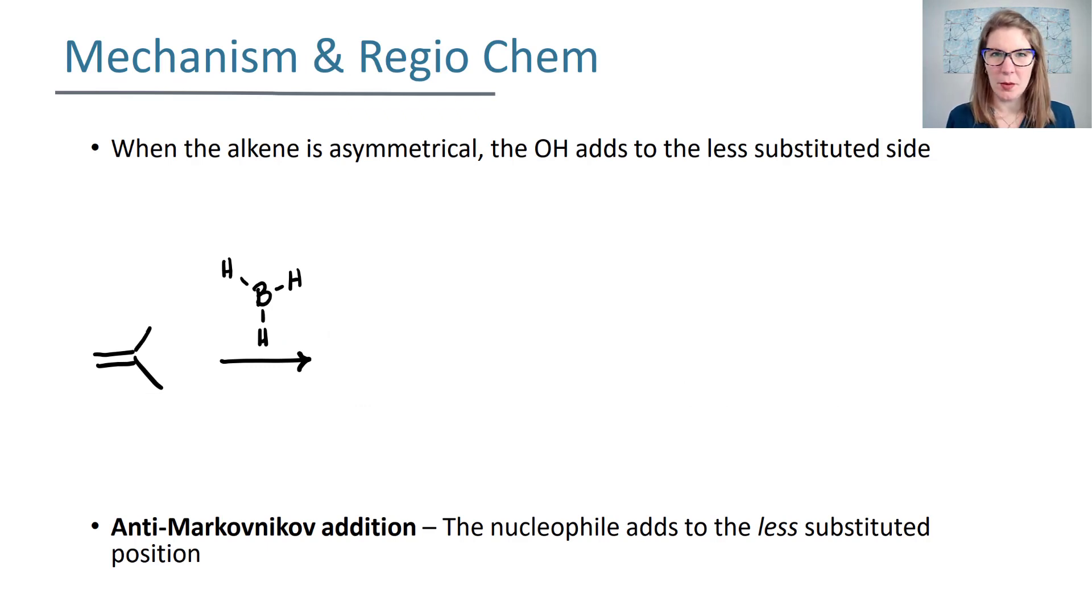First I want to look at the mechanism because the mechanism explains the regiochemistry. If your alkene is asymmetrical your OH is going to add to the less substituted side. The less substituted side is called the anti-Markovnikov addition or the anti-Markovnikov product because Markovnikov products were ones where your nucleophile added to the more substituted side. So anti is the opposite of that. Let's look at the mechanism.